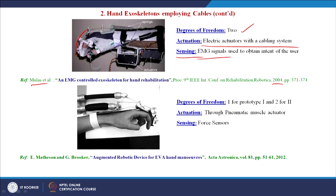The exoskeleton designed by Mathieson and Bruker, entitled 'Augmented Robotic Device for EVA Hand Maneuvers,' has 1 degree of freedom for Prototype 1 and 2 degrees of freedom for Prototype 2, which is shown here. Actuation is through pneumatic muscle actuators — artificial muscle actuators — and force sensors are used to sense the force applied on the fingers.